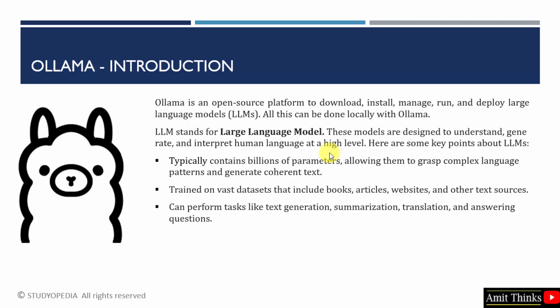You must have heard about LLM models like LLAMA, PHI, GAMMA, and Mistral with billions of parameters. When the parameters increase, the performance of the model also enhances. It typically contains billions of parameters allowing them to grasp complex language patterns and generate text.